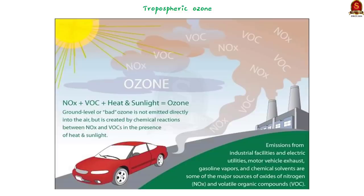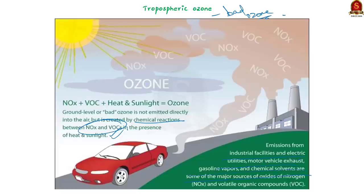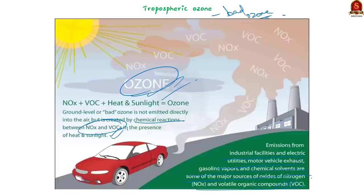Now let us talk about tropospheric or ground-level ozone. The tropospheric or ground-level ozone is not emitted directly into the air, but is created by chemical reactions between oxides of nitrogen and volatile organic compounds. This happens when pollutants emitted by cars, power plants, industrial boilers, refineries, chemical plants, and other sources chemically react in the presence of sunlight. Ozone is most likely to reach unhealthy levels on hot sunny days in urban environments. Note that ozone can also be transported long distances by wind, so even rural areas can experience high ozone levels.